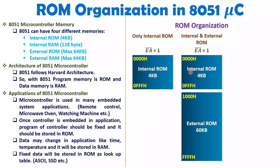When a programmer needs extra memory, they can use both internal and external ROM. With internal ROM, EA bar must equal 1, meaning internal ROM has 4 KB with address range 0000h to 0FFFh — this address is allocated to internal ROM. For additional memory, external ROM is available, and at maximum 60 KB of external ROM can be interfaced. The next address after 0FFFh is 1000h, so that will be the available address range for external ROM. EA bar indicates whether internal ROM is in use.